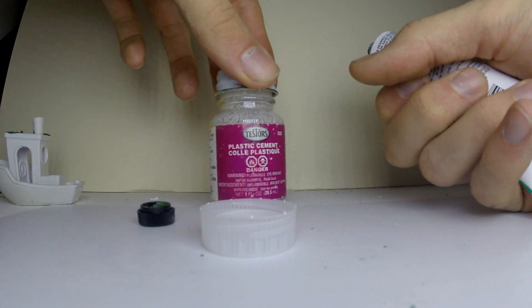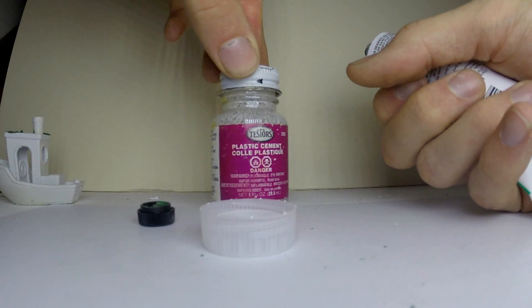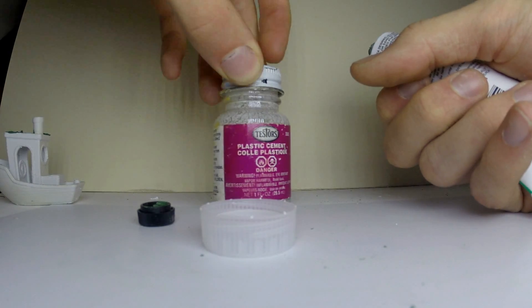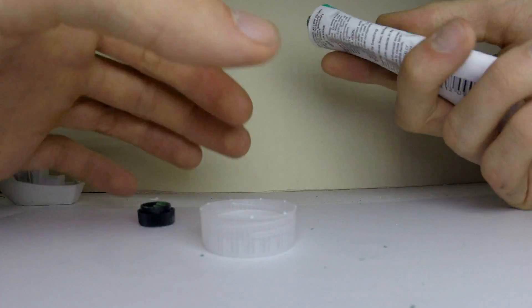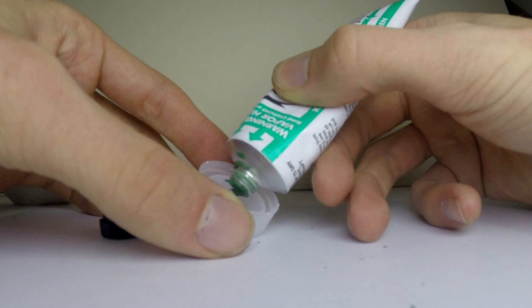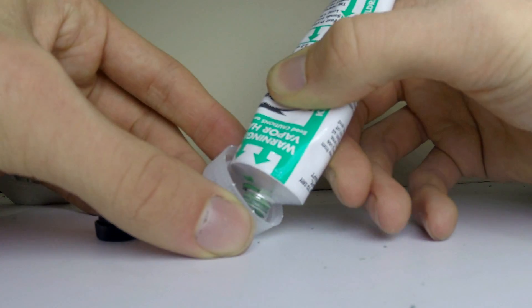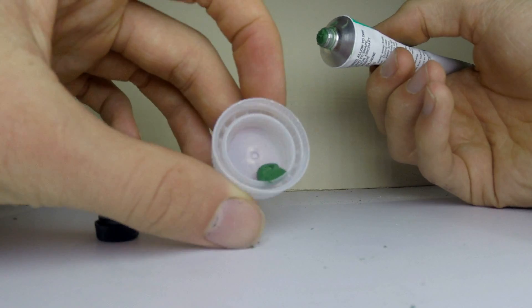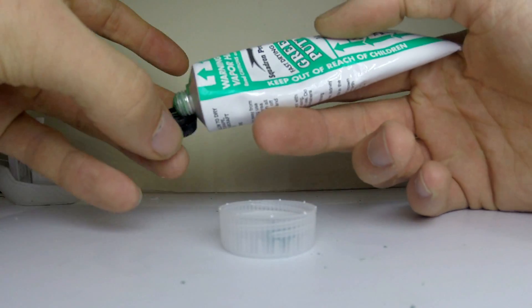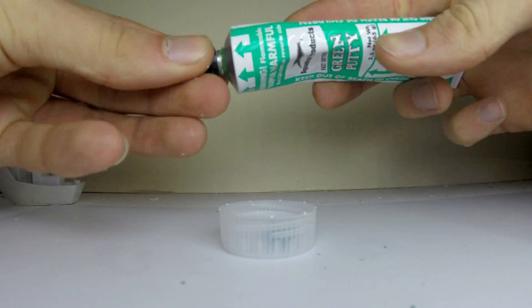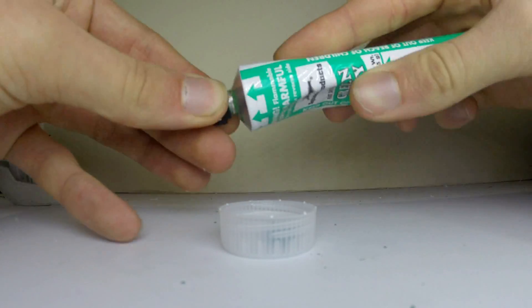You can also do this in a container of the plastic cement if you want, and I'll show you that in a minute. But if you just need to thin out a tiny bit for a small job, just squeeze out a pea-sized amount or however much you feel like you need for the project. Remember to cap this up.